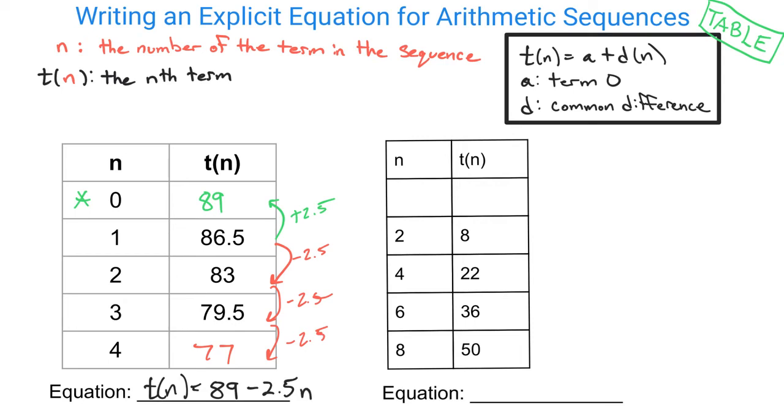Of course, you could switch this order around. You could say negative 2.5n + 89, because this is a positive 89. Either one works. You could also say plus a negative 2.5, because this is a plus here. You might be tempted to do that, but it is easier just to call it a minus right away.